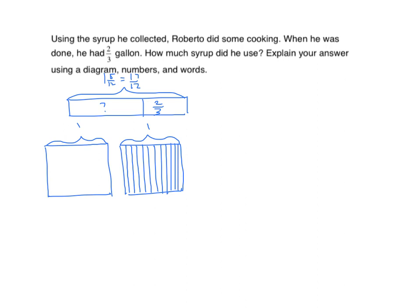Eleven vertical lines partition it into twelve equal parts. I'm going to now bracket it into one and five-twelfths. Let's just count to make sure — yep, that's correct. Now I'm going to subtract my two-thirds from my whole, so I'm going to partition my whole into three equal parts and cross out the two.